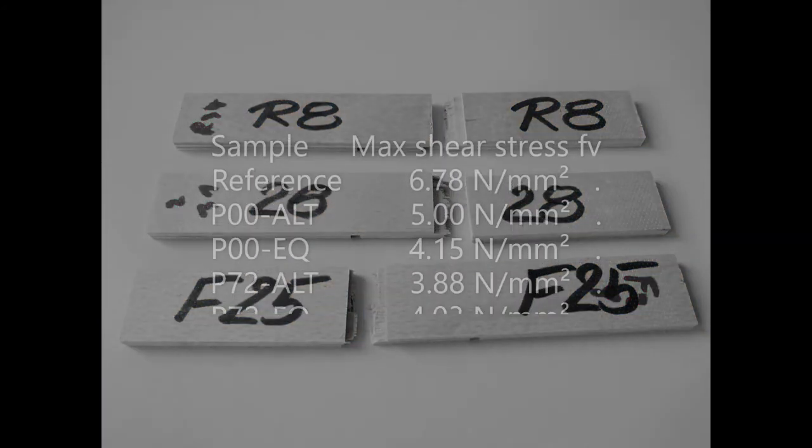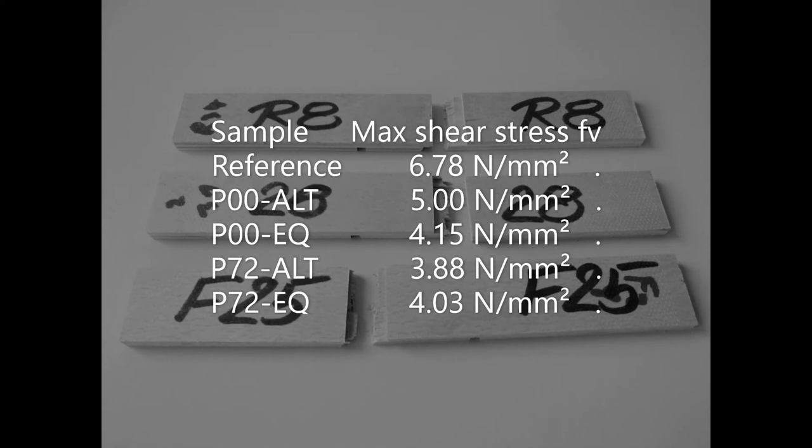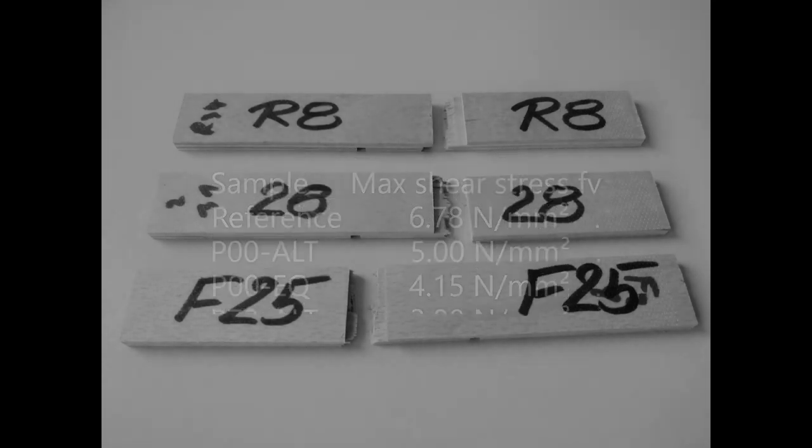On plasma pretreated samples, the maximum shear stress to failure was on average 37% lower than on the reference specimens. This likely is a thermal effect of the plasma treatment, since gliding arc jets have a slightly elevated gas temperature, as opposed to, for example, barrier discharge plasmas.